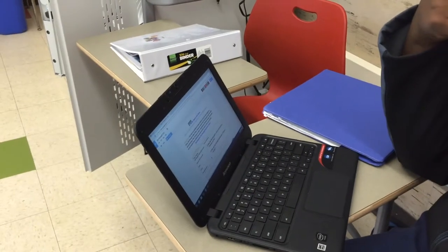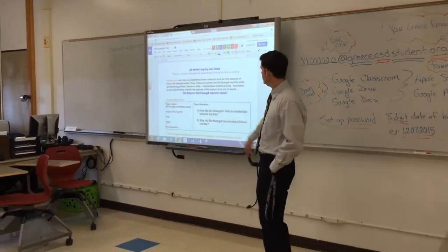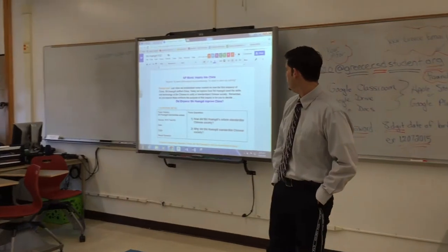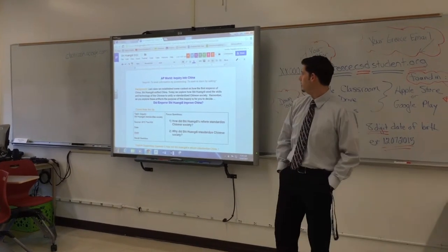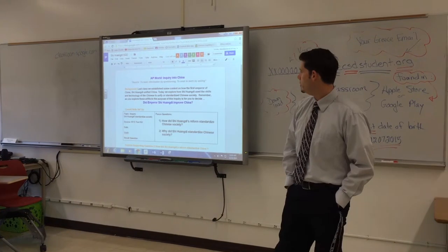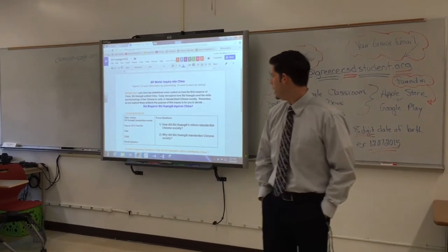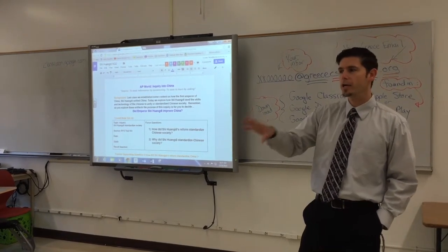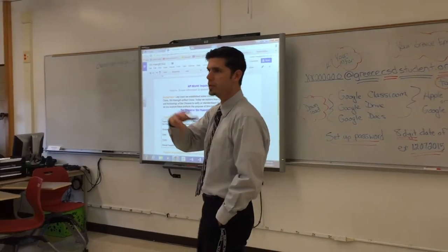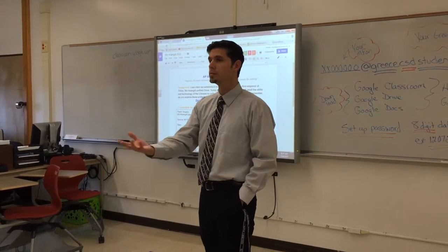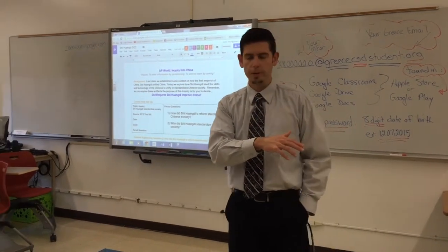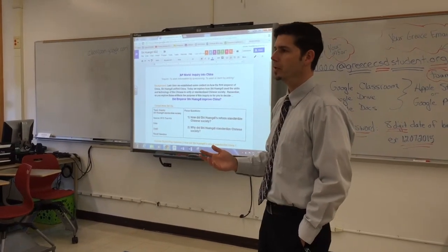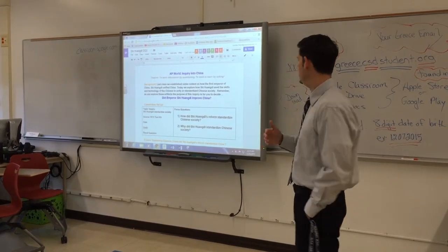This is not the same paper we used yesterday — this is a different one, just a similar format. At the top, it gives you a little background: last class we established some context on how the first emperor of China, Xiwandi, unified China. Today we explore how Xiwandi used the skills and technology of the Chinese to standardize Chinese society. As you explore these artifacts, the purpose of this inquiry is for you to decide — did Emperor Xiwandi improve China? On Friday we're going to have a debate about whether this guy was actually good for China, based on the work you're doing over these class periods and the things you're saving on Google Classroom.